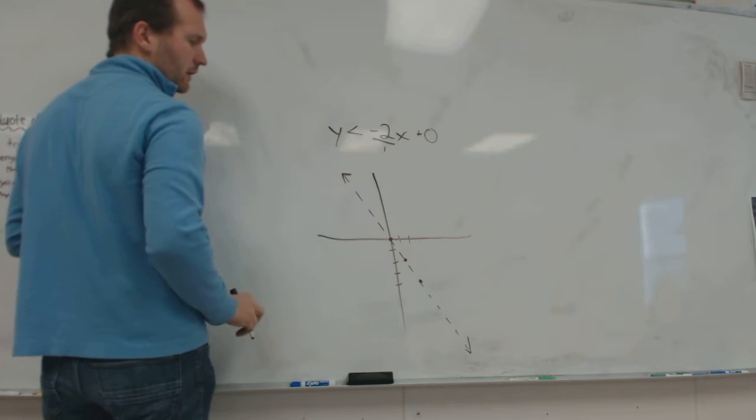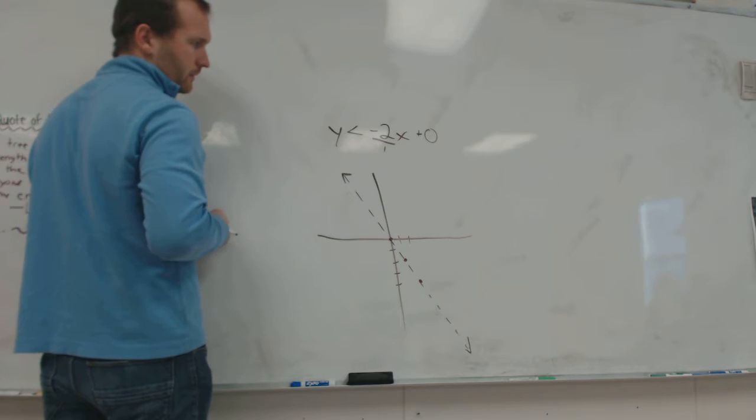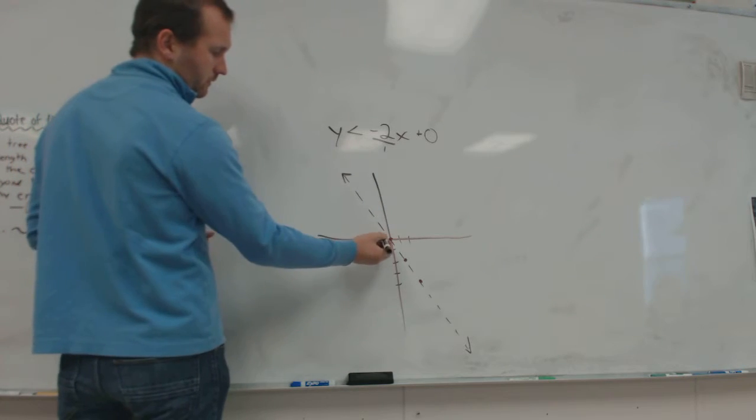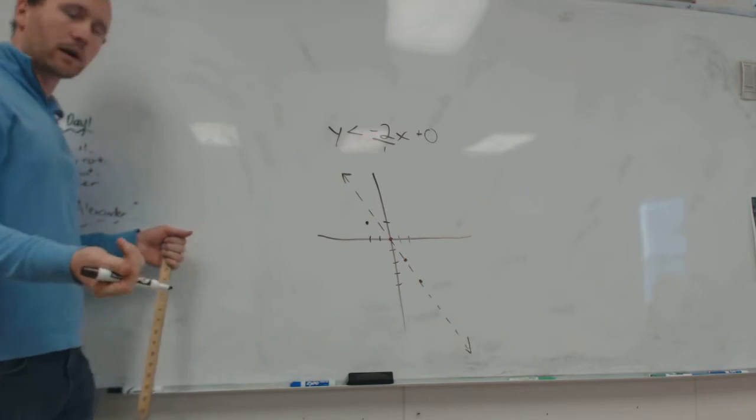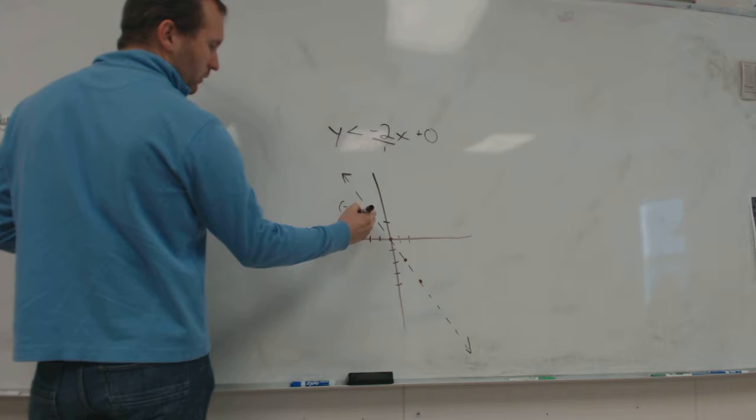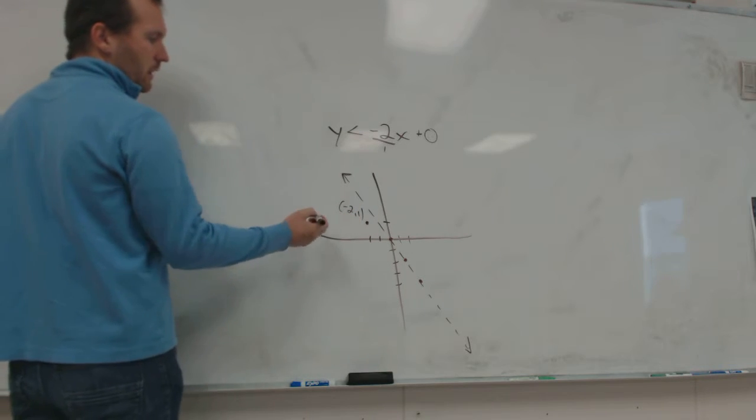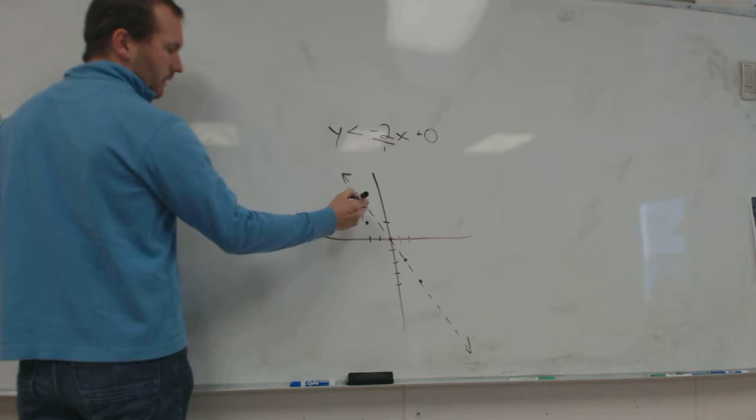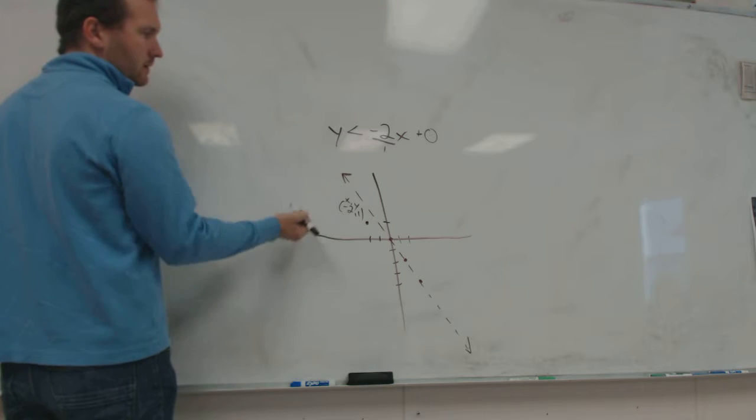So what's a point I could choose here? Negative 2, what is that? Negative 2, 1. Negative 2, 1. So that would be right here. I could choose that point if I wanted to. Let's do it. So this is the point negative 2, 1, which is my x and which is my y. X, 1. Alphabetical order. Okay. So plug it in here.